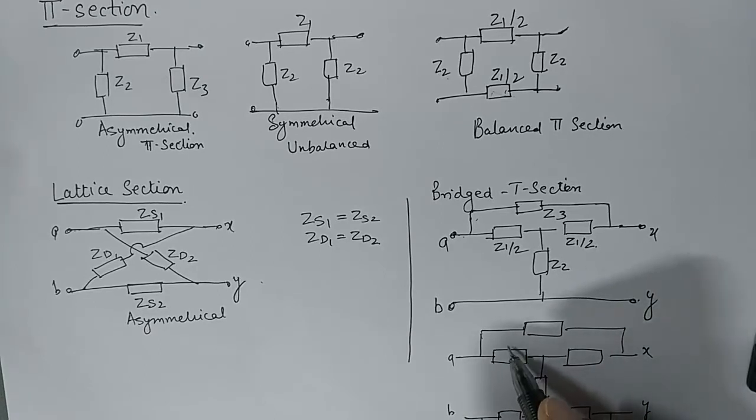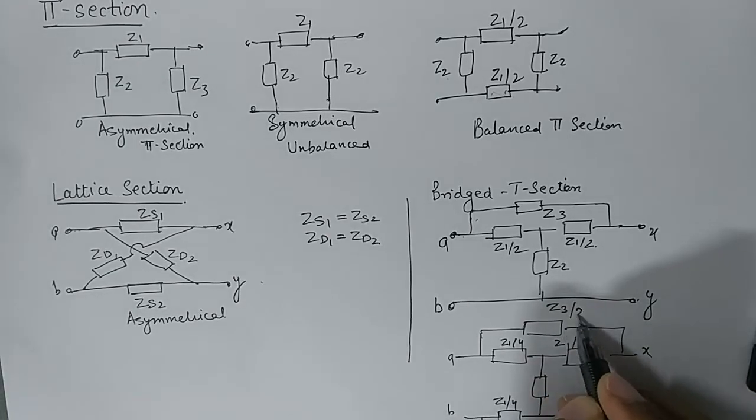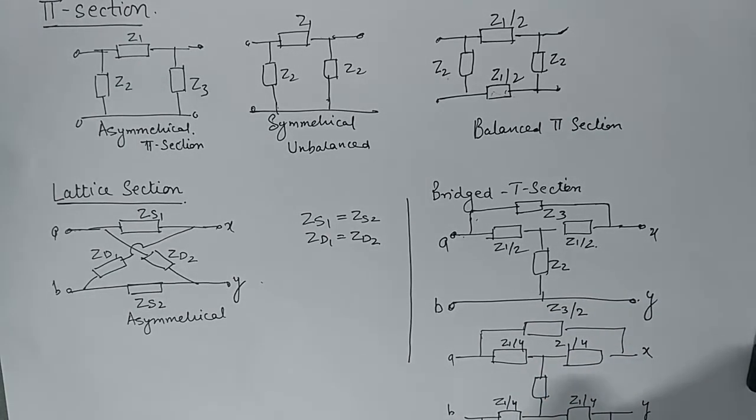Of course let us say this becomes Z1 by 4, all of these become Z1 by 4, and this becomes Z2 by 2, and this becomes Z2 by 2, and this becomes Z3.